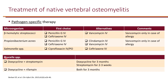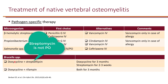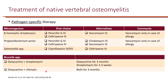For brucella species, which is extremely uncommon, the only two options are the combination of either doxycycline and streptomycin, or the combination of doxycycline plus rifampin. Pay particular attention to the duration of therapy because brucella species, although uncommon, are rather more difficult to eradicate, so a very long duration of therapy is recommended.